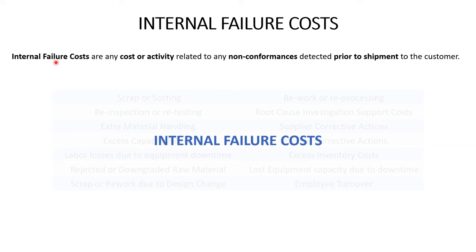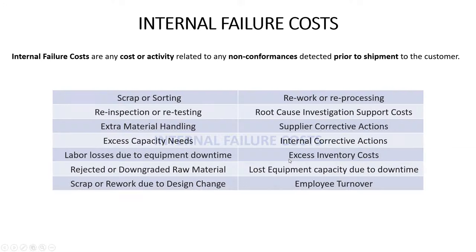The first cost of poor quality bucket is internal failure costs. This is any cost or activity related to a non-conformance that is detected prior to shipment to the customer. The only difference between an internal failure and an external failure is when that failure is detected: if it's detected prior to shipment, it's internal; if it's detected after shipment to the customer, it's external.